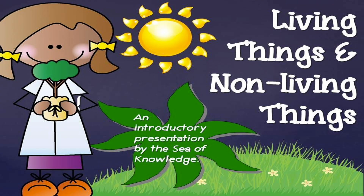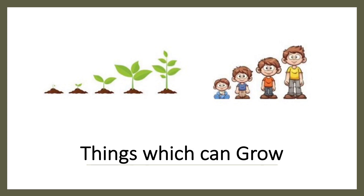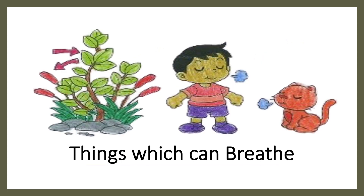Today we are going to learn about living things and non-living things around us. Things which can grow, such as plants, trees, and human beings, are considered as living things. Things which can breathe, such as plants, human beings, and animals, are also considered as living things.